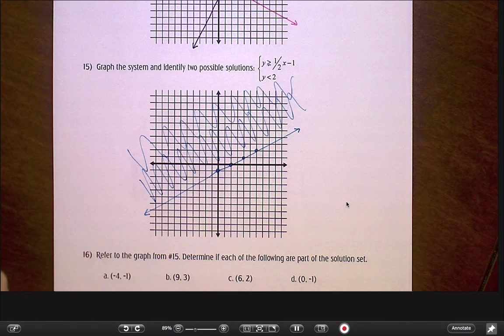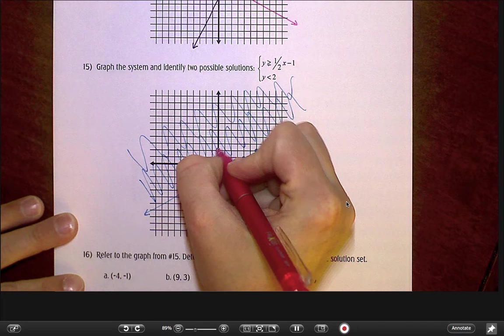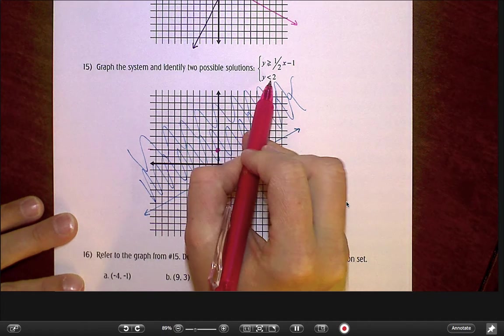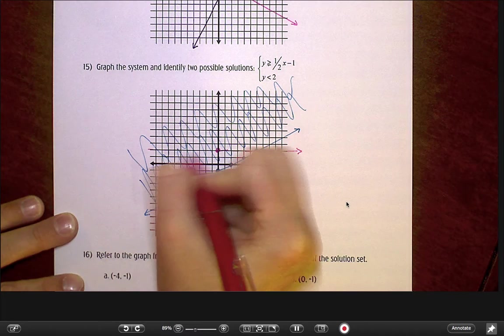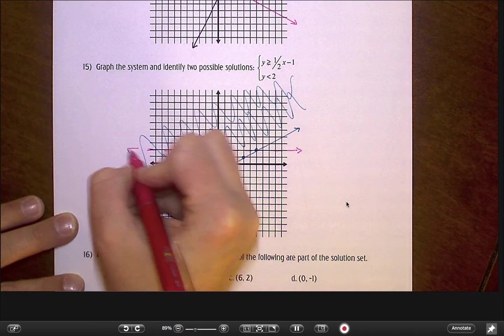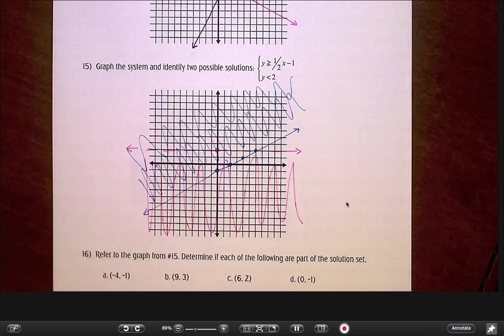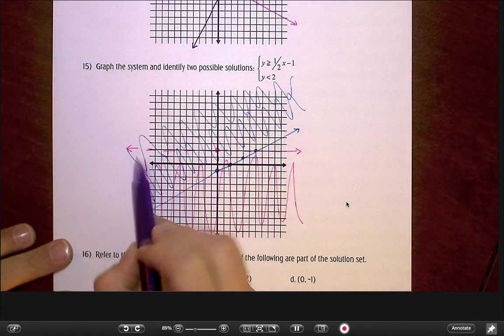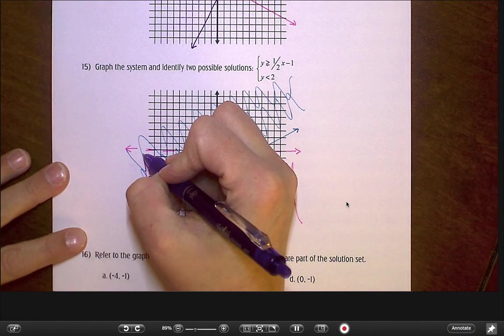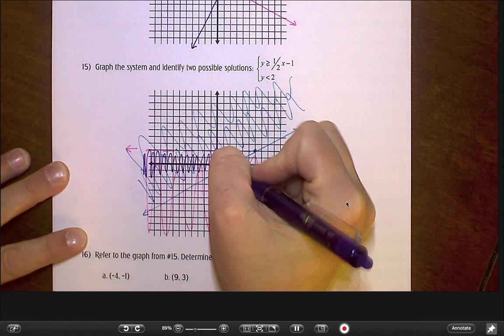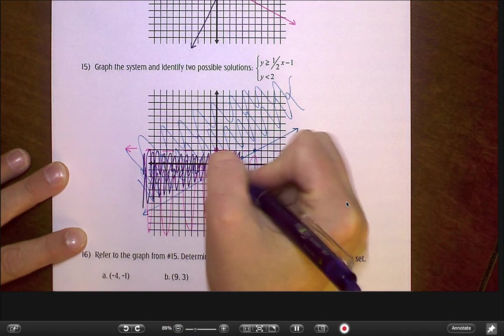My second line there is y is less than 2. That's going to be just a horizontal line at y equals 2. So it's going to be a line that runs this way. There's no equal bar this time, so I'm going to use a dotted line. And we're shading everything less than, so that's everything below this line. So we have this kind of triangle shaped area that got shaded in both inequalities. And so that is really our solution set. That's what we want to darken in as our solution here.